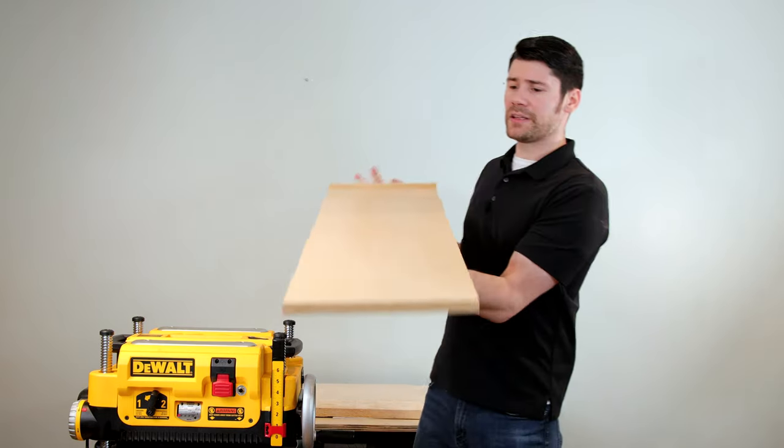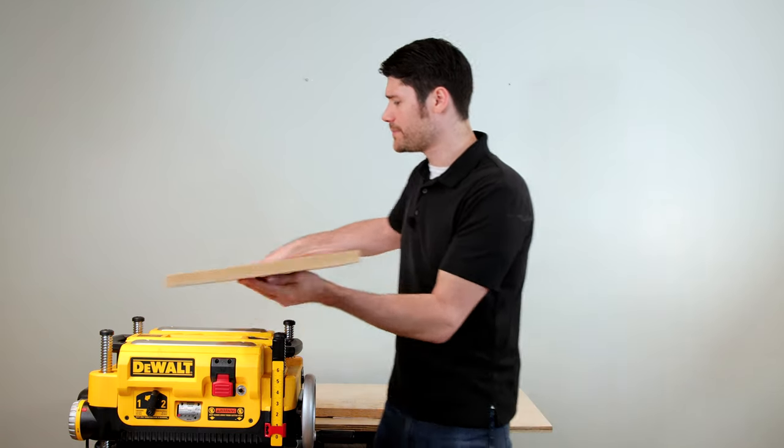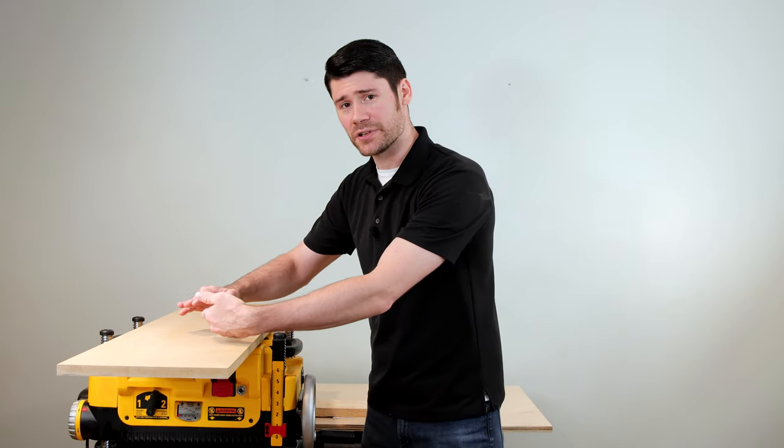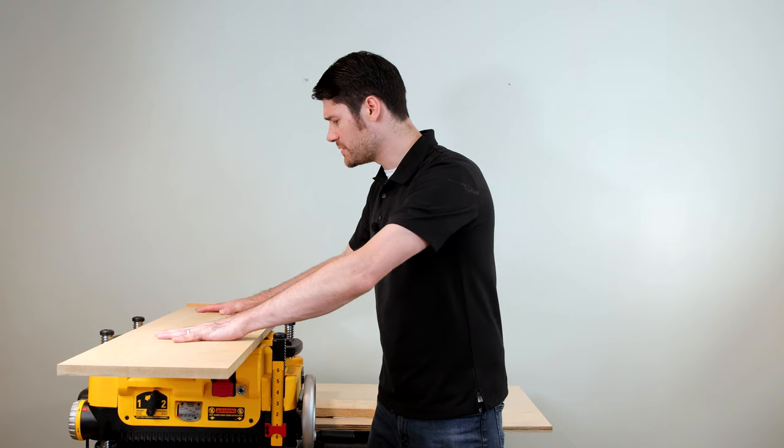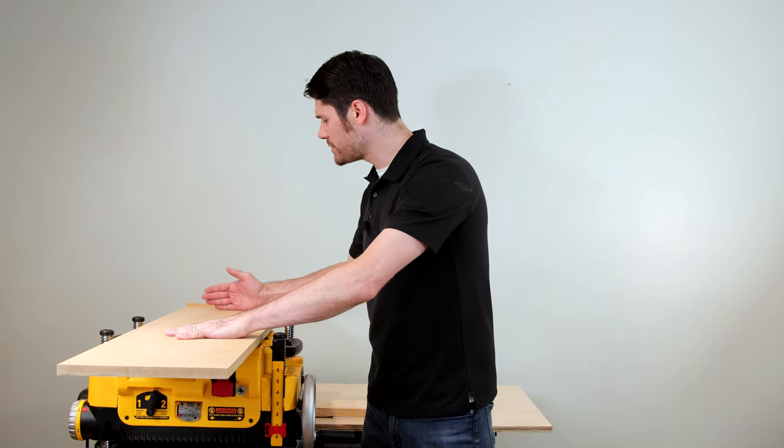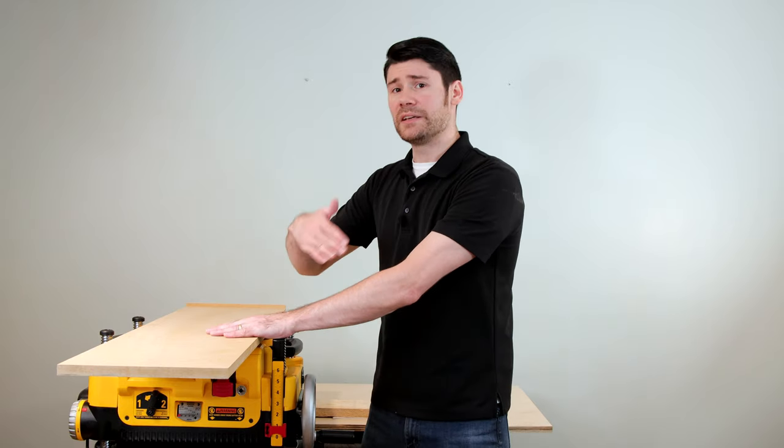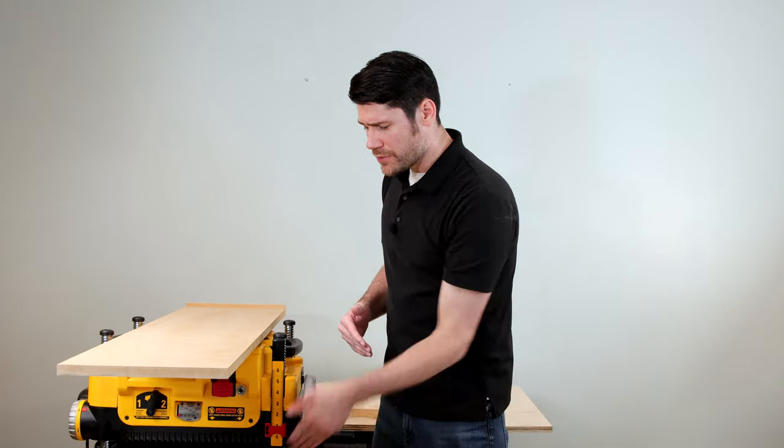But what this sled will allow us to do is run a slightly twisted piece of wood through. And we can then shim an uneven portion of that wood to where we can then get a steady solid piece of wood on our sled being pushed through. And we can basically joint one side, which then we can flip off and run the jointed or flattened side straight through on just the bed of our planer to remove a twist from a board.